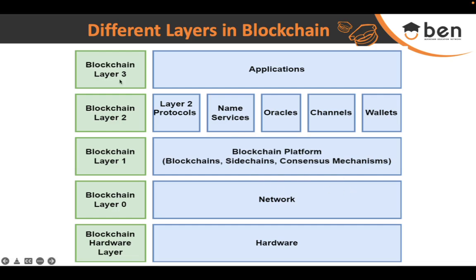This is followed by Layer 2, where we mostly take care of scaling solutions. Because blockchain is decentralized and has to manage security, the number of transactions per second is very low, making it a slow system. In order to enhance throughput, we have this layer in place. Layer 3 is the application layer, which mostly takes care of the user interface. Now let's talk about all the layers in a bit more detail.